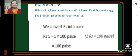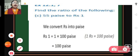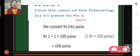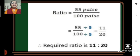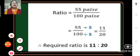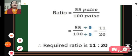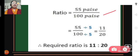Problem 7C: find the ratio of 55 paise to rupees 1. We convert 1 rupee into paise: 1 rupee equals 100 paise. So the ratio of 55 paise to 100 paise is 55 upon 100. Dividing both numerator and denominator by 5 gives 11 upon 20. The ratio of 55 paise to rupees 1 is 11 is to 20.